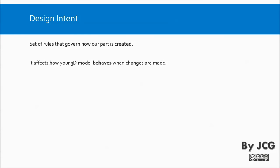So what is the design intent? It is basically a set of rules that govern how our part is created, but also it affects how your 3D model behaves when some changes are made to the part. It includes two things: the parameters, which are the dimensions of the part, and also relations. Some examples of the relations are symmetrical relationships or tangent relationships between different geometric characteristics of our part.